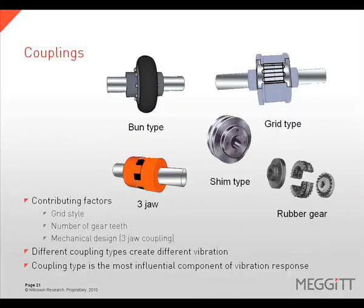Coupling type can be a major contributing factor to the vibration response of misalignment — different coupling types will create different vibration responses. A bun style coupling may exhibit the traditional 1 times or 2 times vibration response. However, for a 3 jaw coupling, the 3 times vibration is the best indicator of alignment condition. Grid style or gear couplings will vary depending on how many grid elements or gear teeth are in the load zone.